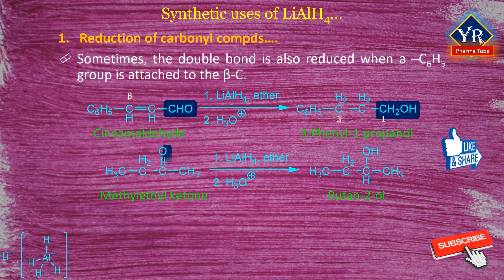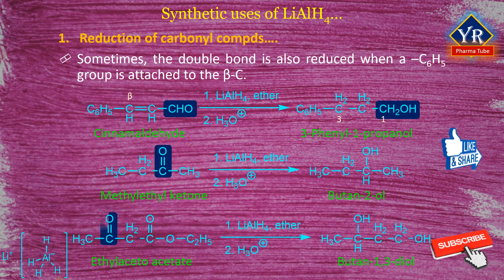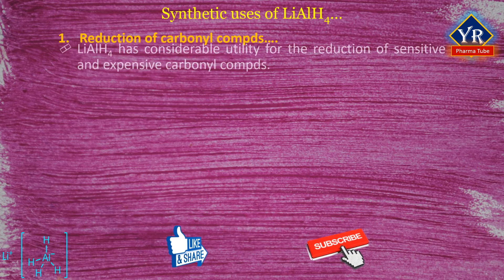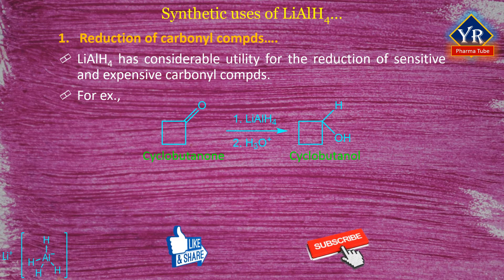The ketonic group present in methyl ethyl ketone and ethyl acetoacetate is reduced to the corresponding alcohols, butane-2-ol and butane-1,3-diol respectively, which are secondary alcohols. The reagent lithium aluminium hydride is of considerable utility for the reduction of sensitive and expensive carbonyl compounds. For example, cyclobutanone is converted to cyclobutanol by the action of lithium aluminium hydride.